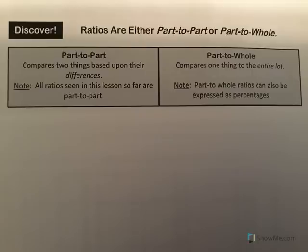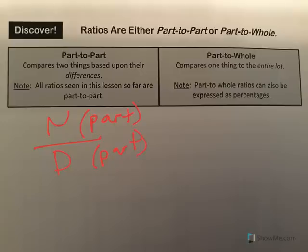Part-to-part simply means if we have a ratio, the numerator and the denominator are both part of the population. So if you're thinking about males to females, well, if we talk about males over females, those are both part of the human population. We're not talking about males to everybody — we're talking about males to females. So it's part-to-part.